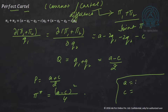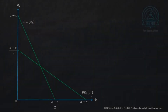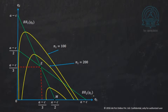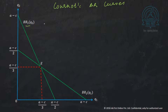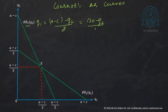A useful exercise: take A equal to 120 and C equal to 0. Then BR1 is Q1 = (120 minus Q2) / 2, i.e., Q1 = 60 minus Q2/2. So when Q2 is zero, Q1 is 60, which is (A minus C)/2; and when Q1 is zero, Q2 is 120, which is A minus C. Similarly, BR2 gives Q2 = 60 when Q1 = 0, and Q1 = 120 when Q2 = 0.